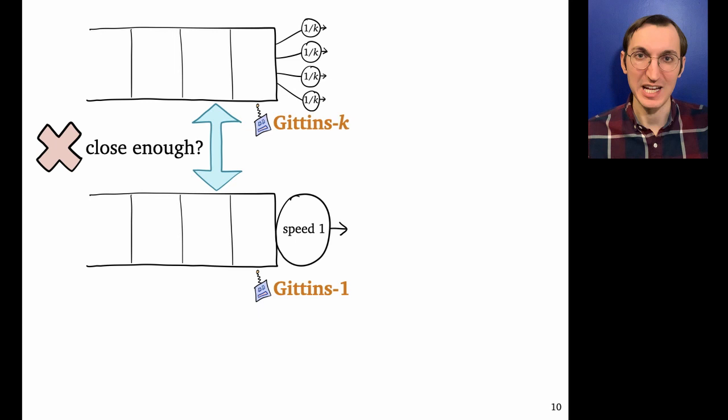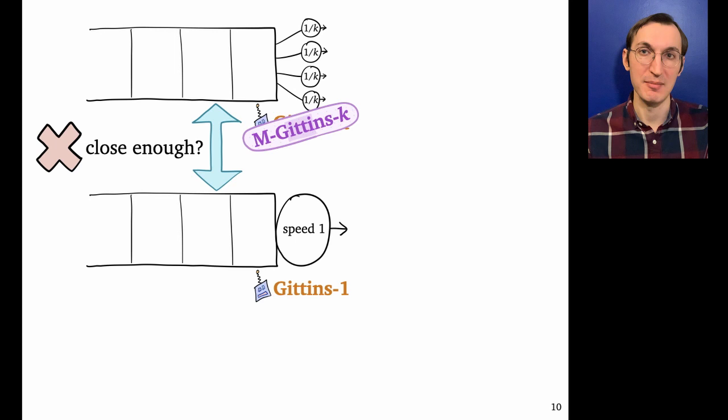What we were able to do instead was to patch Gittins-k, kind of apply a band-aid, create a new version of Gittins called M-Gittins. And it turns out that M-Gittins-k, this new flavor of Gittins-k, is close enough to Gittins-1.